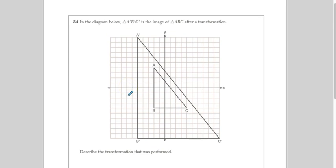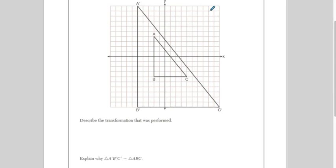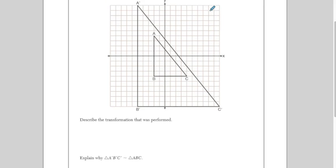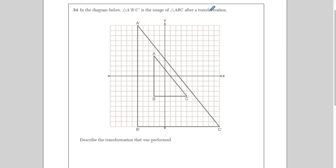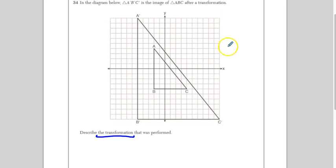And then we have 34. In the diagram below, triangle ABC, A prime, B prime, C prime is the image of triangle ABC after a transformation. Describe the transformation that was performed. All right? So, the transformation. This is a singular transformation. Well, we see that ABC has gotten much bigger, so we know it's going to be a dilation. But there's a few things that we always have to define for a dilation.